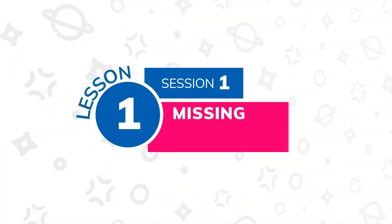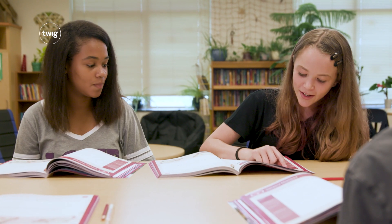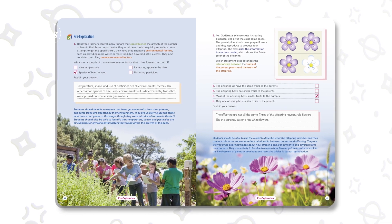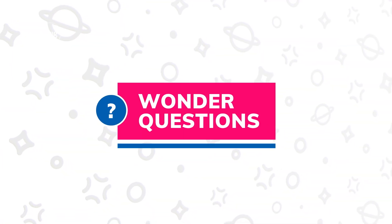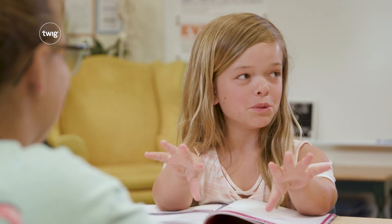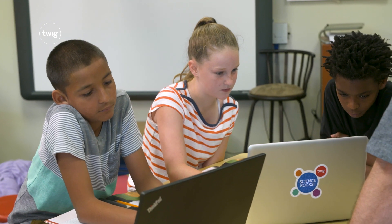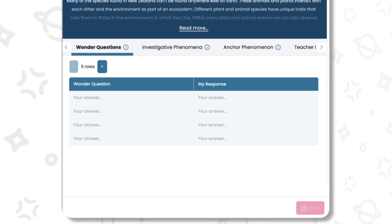As students progress through a lesson, they explore and explain smaller investigative phenomena that will help them ultimately address the anchor phenomenon. Students observe examples of diversity of traits amongst their peers, and a pre-exploration gives teachers an opportunity to pre-assess students' prior knowledge. The Wonder Questions language routine is an essential part of Twig Science's student-centered approach, enabling students to feel that it's their curiosity that drives the learning. Questions are recorded on a Wonder Questions chart and in students' digital phenomena trackers.